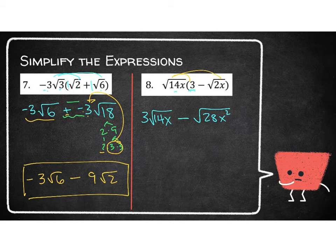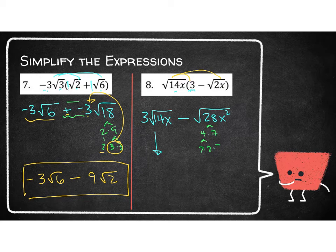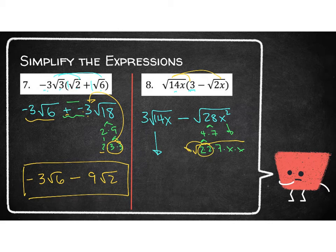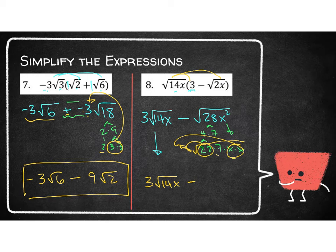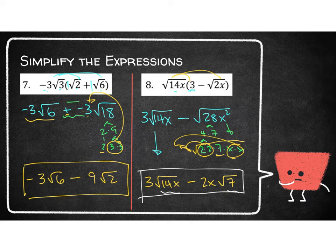Now I look for what I can break down. 14 is just 2 times 7 — I can't take out a pair of anything, so this whole term stays the same. However, 28 I can break apart: it's the same as 4 times 7, and 4 is 2 and 2. Also, x squared is x times x. So I've got a pair of 2s and a pair of x's that can come out of the radical. That gives a 2 and an x on the outside, with a 7 left underneath. So the simplified expression is 3 root 14x minus 2x square root of 7. 14x and 7 are not like radicals, so I cannot do anything else.